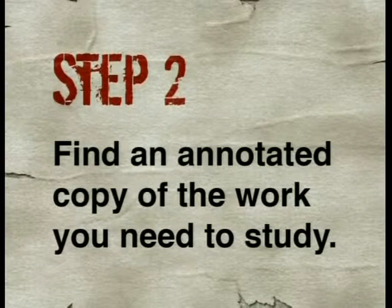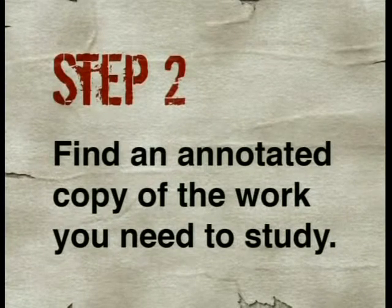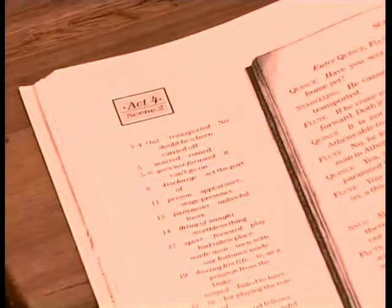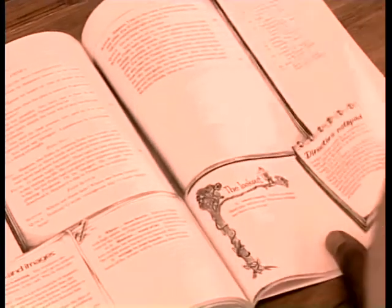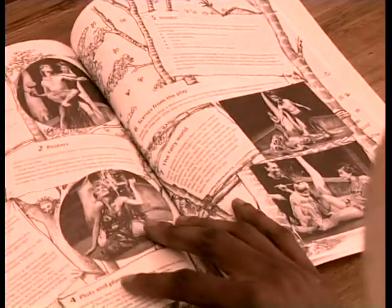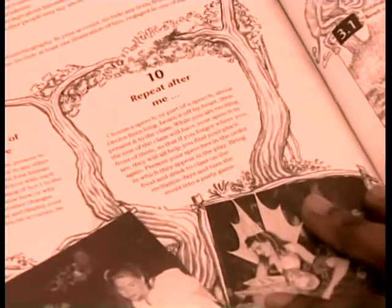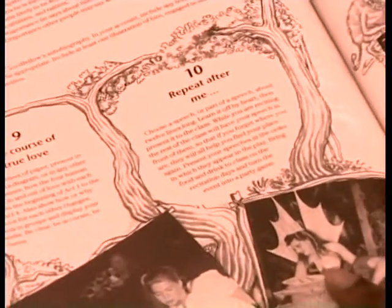Then find an annotated copy of the work you need to study. Annotated means that notes and comments are added to the text. Look for a copy that has detailed annotations at the bottom of each page or on the page opposite Shakespeare's text. The annotations will help you to better understand Shakespeare's language and events from history or mythology that he has referred to.